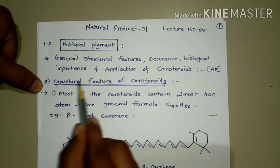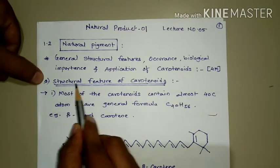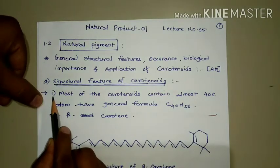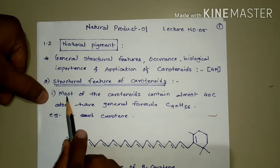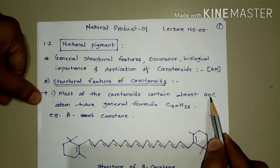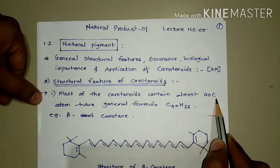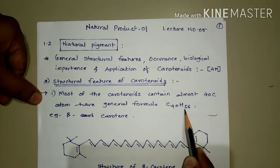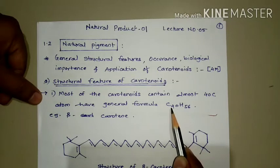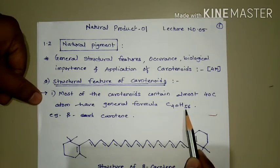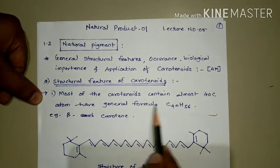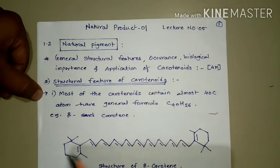The first part of this topic is structural features of carotenoids. The first point in the structural features is: most of the carotenoids contain almost 40 carbon atoms and have the general formula C40H56. That means the maximum number of carbons is 40 and hydrogens 56 are involved in the carotenoid molecular formula.